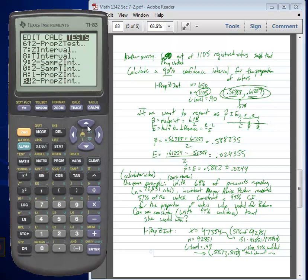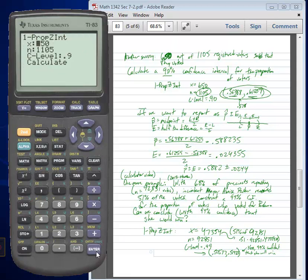We're calculating a confidence interval for a proportion. So int for interval, prop for proportion, one because it's just one proportion that we're using there. We're not comparing two different proportions. And then we put in 47,354.